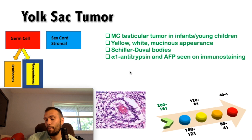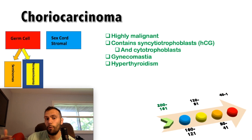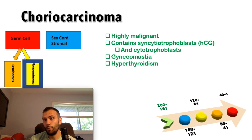Choriocarcinoma is a highly malignant tumor. Think syncytiotrophoblastic and cytotrophoblastic tissue, which releases HCG. Because it's a non-seminoma, AFP may also be elevated. Since HCG shares structural similarity with LH, FSH, and TSH, it can bind those receptors—leading to gynecomastia if binding LH/FSH receptors, or hyperthyroidism symptoms (sweating, heat intolerance, symptoms similar to Graves' disease) if binding TSH receptors. In the setting of a testicular lesion, suspect choriocarcinoma.